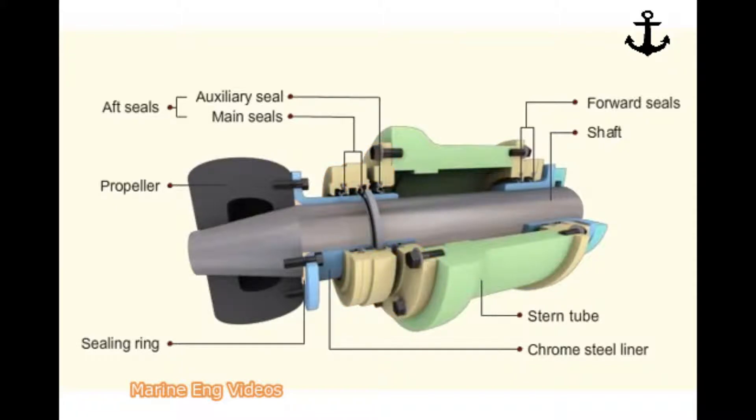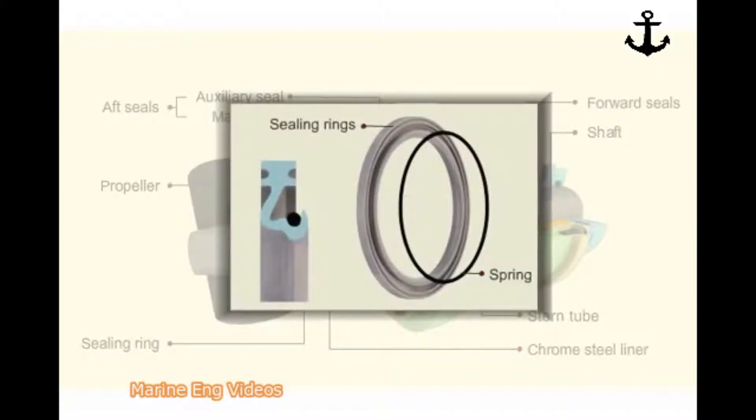The seals work in conjunction with oil lubricating bearings. The aft sealing assembly consists of two main and one auxiliary sealing rings. All sealing rings are spring-loaded and are able to seal any position of the shaft.